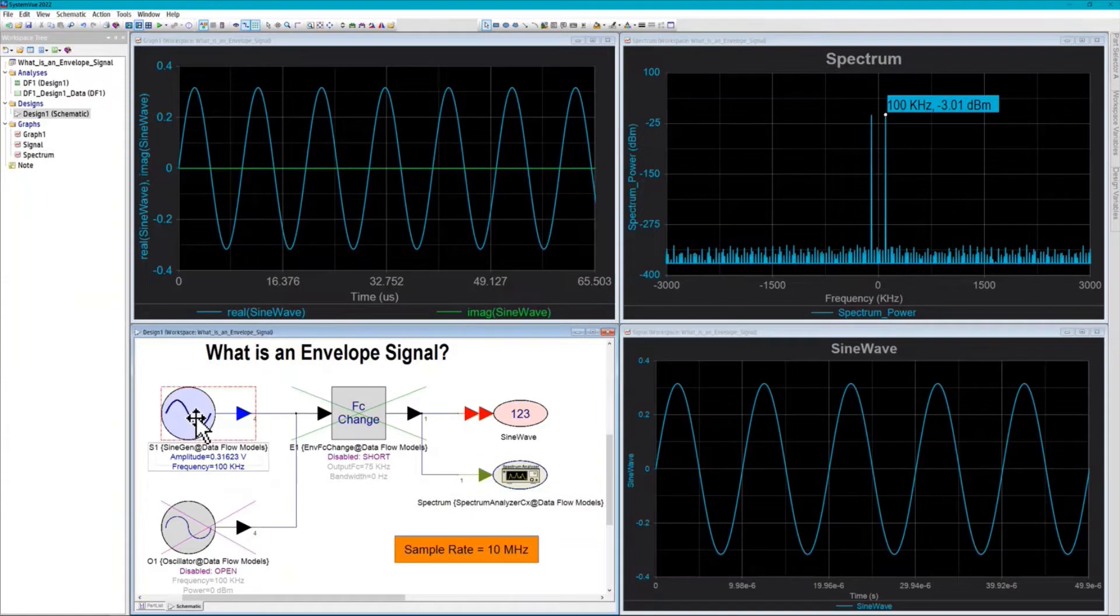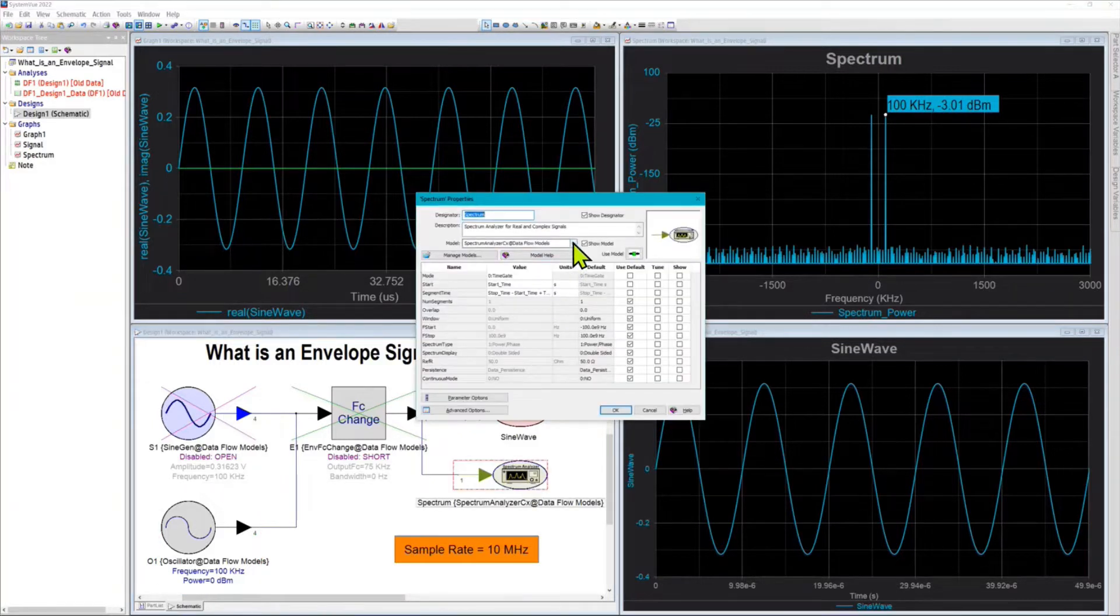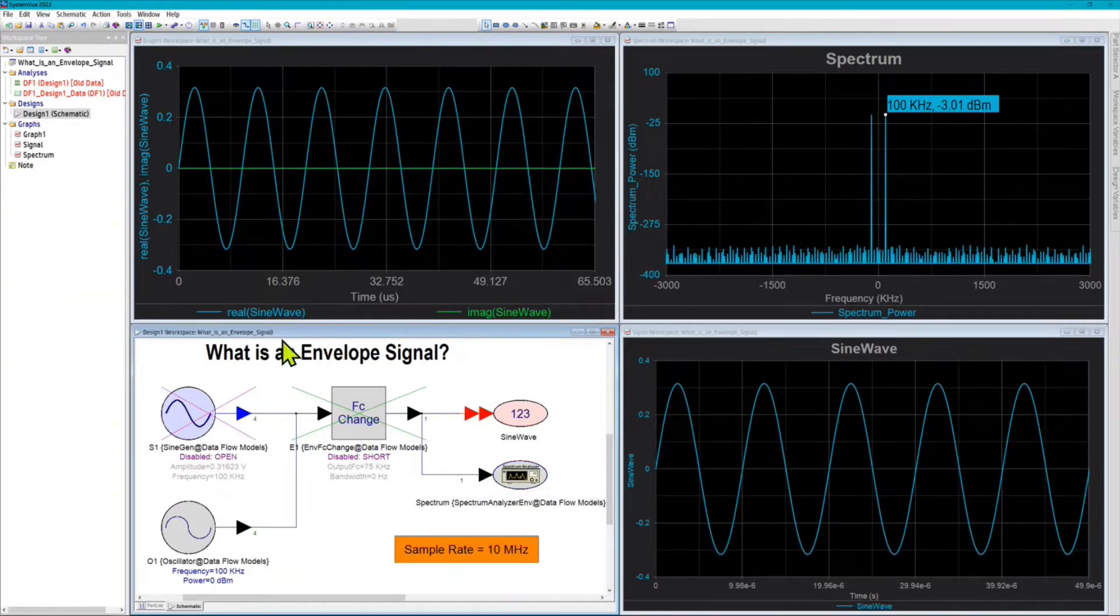What happens now if we switch over to complex envelope mode, where the source still puts out 100 kilohertz, but it is a black arrow indicating an envelope signal. It's 100 kilohertz, and it's going to go straight into the syncs as well. I have to change the spectrum analyzer to an envelope version of itself instead of the complex version. And the result is this.